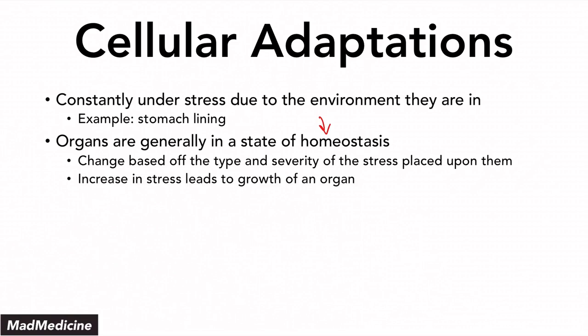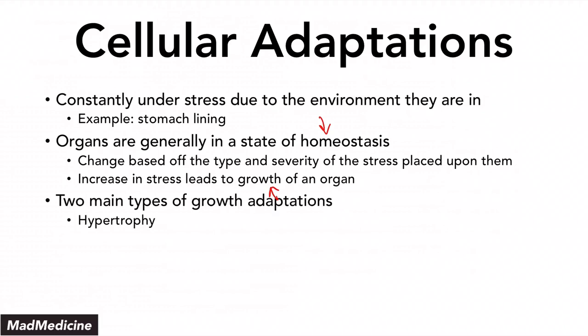An increase in stress beyond a certain level will eventually lead to the growth of an organ. The two main types of growth adaptations we've discussed in previous videos are hypertrophy and hyperplasia.